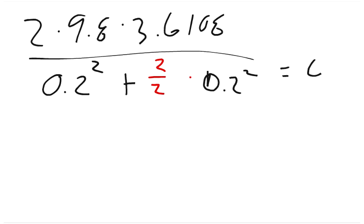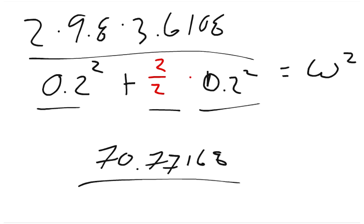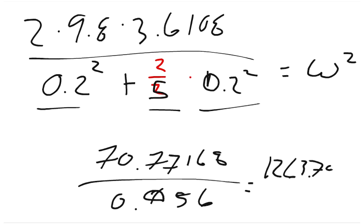This all equals omega squared. Multiplying 2 times 9.8 times 3.6108, the numerator is 70.77168. The denominator is 0.2 squared plus 2/5 times 0.2 squared, which gives 0.056. Dividing, we get 1263.78, which equals omega squared. Taking the square root of that number gives us our angular speed.